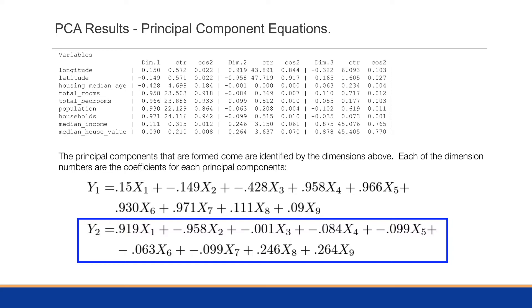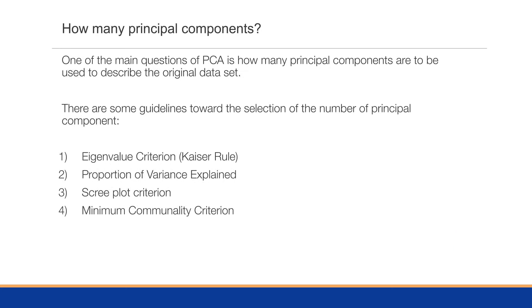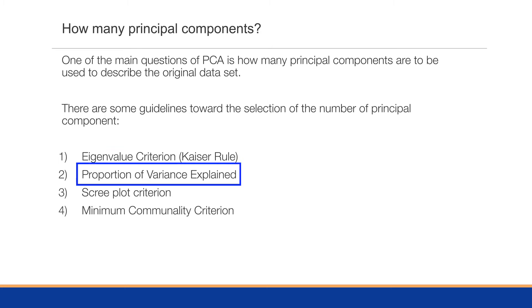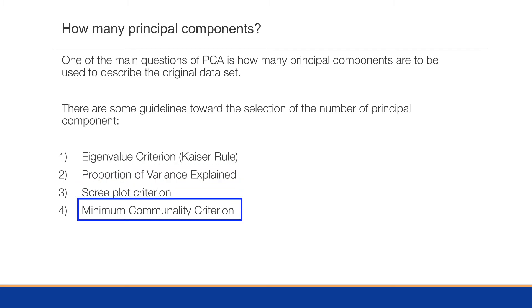One of the key questions after obtaining equations is: how many principal components do you need? There are four guidelines for selecting the number of principal components: the eigenvalue criterion (also known as the Kaiser rule), proportion of variance explained, scree plot criterion, and the minimum communality criterion.